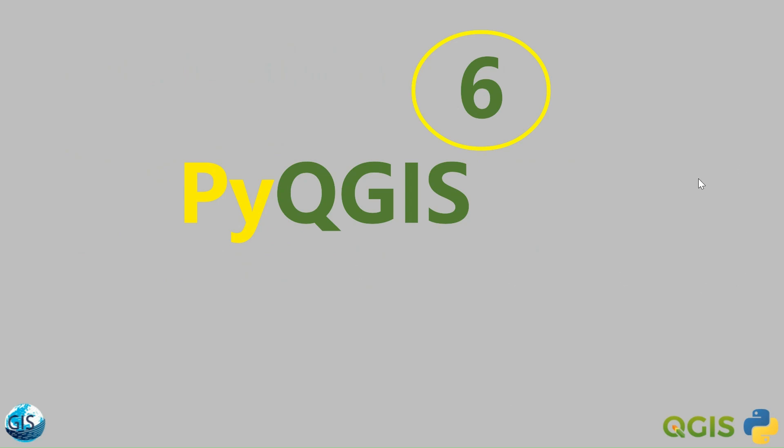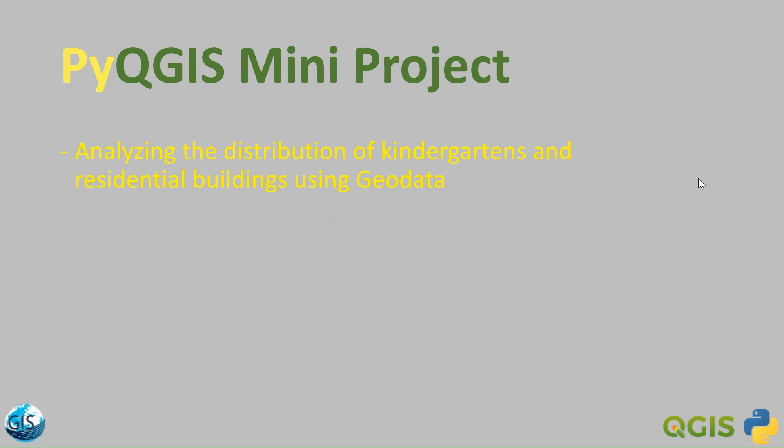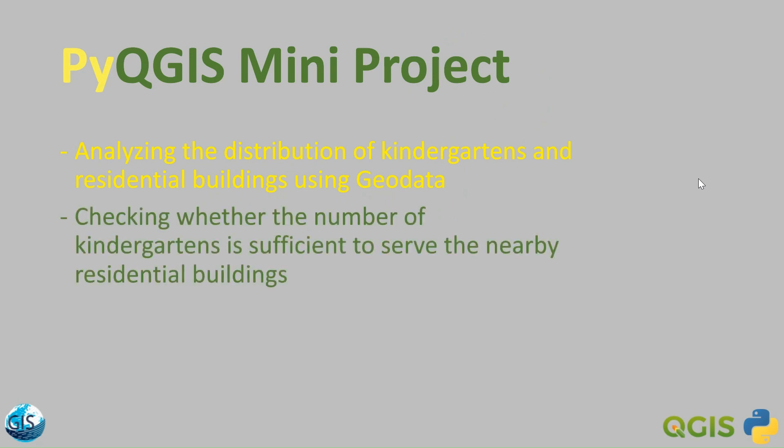Welcome back to another tutorial of PyQGIS in the GIS World Academy with Mohamed. Today we will talk about our first PyQGIS mini project. In this tutorial, we will answer how we can analyze the distribution of kindergartens and residential buildings using geodata, and how we can check whether the number of kindergartens is sufficient to serve the nearby residential buildings. Let's get started!